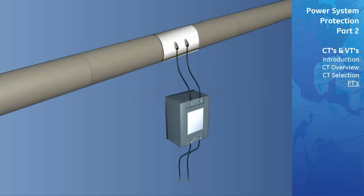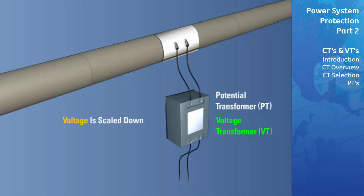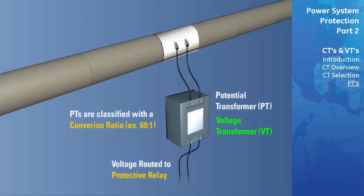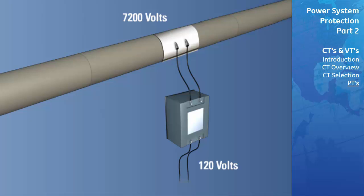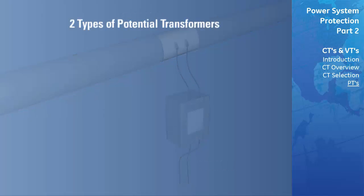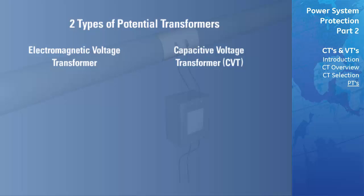The next type of transformer we will cover is the potential transformer, symbolized as PT, or sometimes known as a voltage transformer, symbolized as VT. Similar to current transformers, potential transformers scale down the voltage passed through them. The scaled down voltage is then routed to a protective relay for measurement. A PT is classified with a conversion ratio indicating the amount the primary voltage is scaled down — for example, 60 to 1 scales the primary voltage down to 120 volts. There are two different types of potential transformers used today: the electromagnetic voltage transformer and the capacitive voltage transformer.